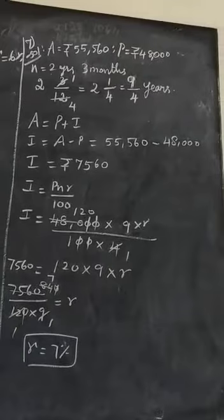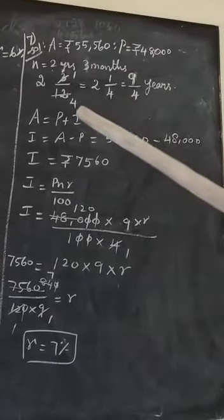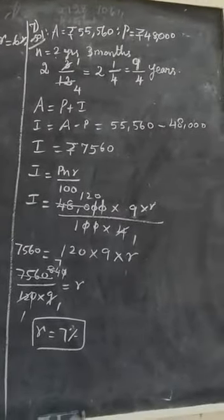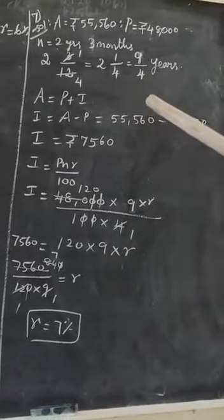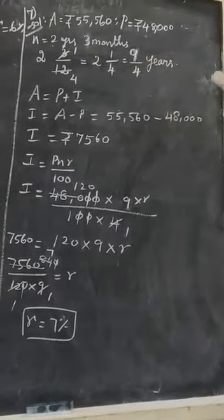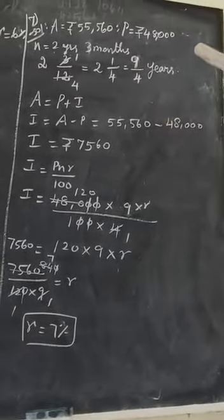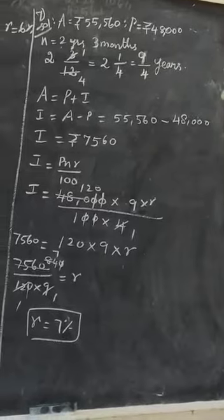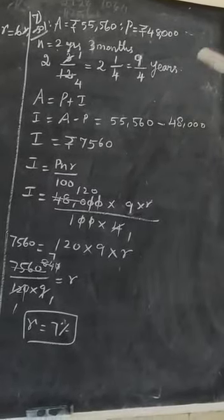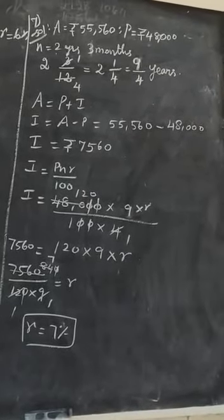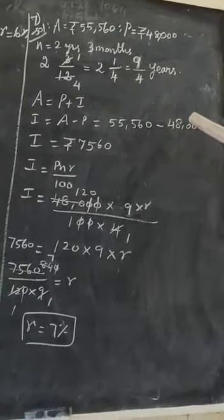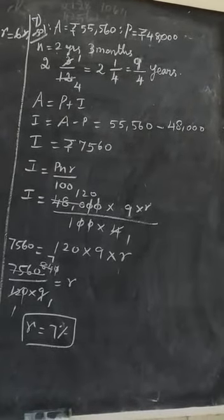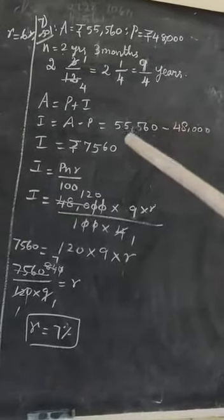For Problem 7: A = 55560, P = 48000, and n = 2 years and 3 months. To convert: 3 months out of 12 months in a year gives 3/12, which cancels to 1/4. So n = 2 and 1/4 years, which as an improper fraction is 9/4. Using A = P + I and substituting, we get I = rupees 7560.